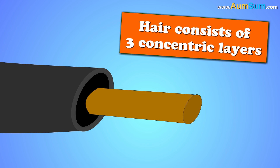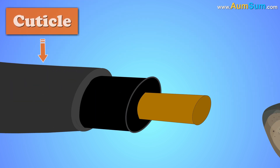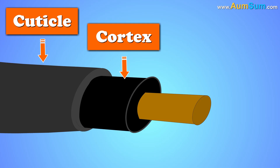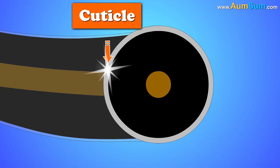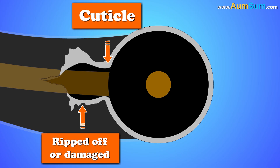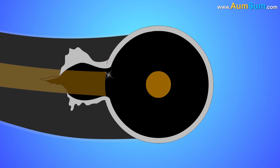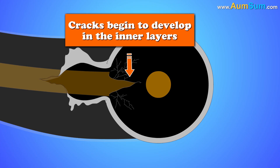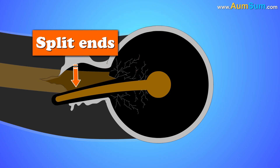Our hair consists of three concentric layers. The outermost tough layer is called the cuticle. The middle layer is called the cortex, and the innermost layer is called the medulla. Split ends occur when the cuticle gets ripped off or damaged. As there is no longer any tough structure to hold the hair together, cracks begin to develop in the inner layers, thus giving rise to split ends.